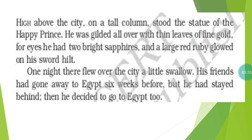From this paragraph we get a description of the statue. First, it was placed on a high platform. Second, it was covered with thin layers of gold. Instead of eyeballs, there were two bright shining sapphire stones, and in the handle of the sword a bright ruby stone was placed. Two vocabulary words: 'gilded' means covered — he was covered all over with thin leaves of fine gold. 'Hilt' means the handle of a weapon, so the sword hilt is the handle of the sword.